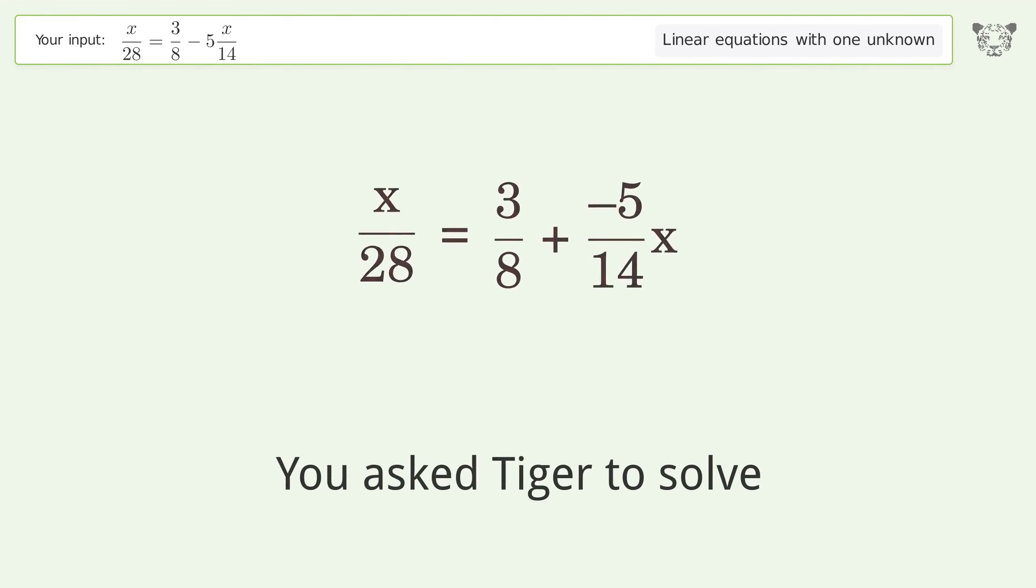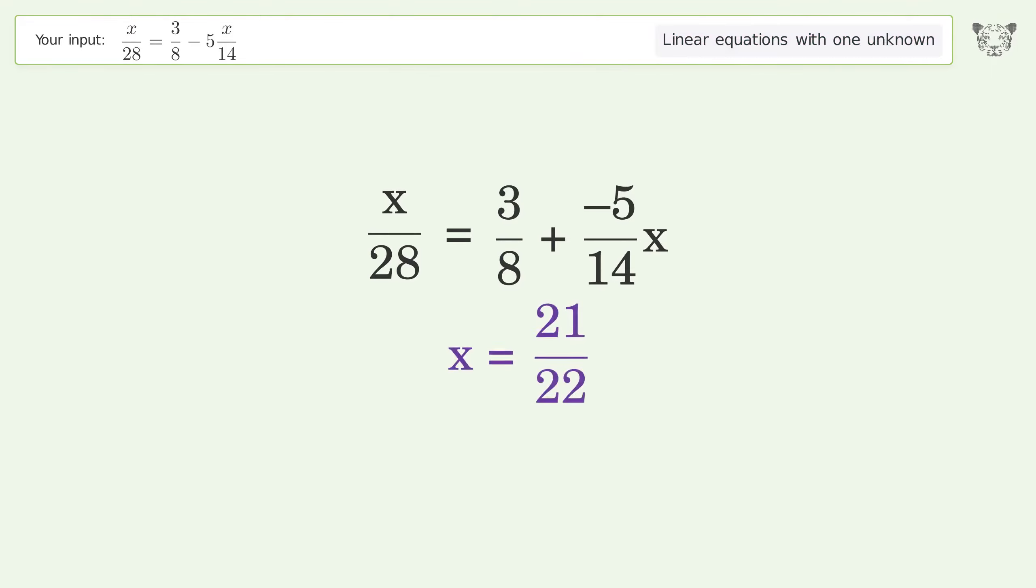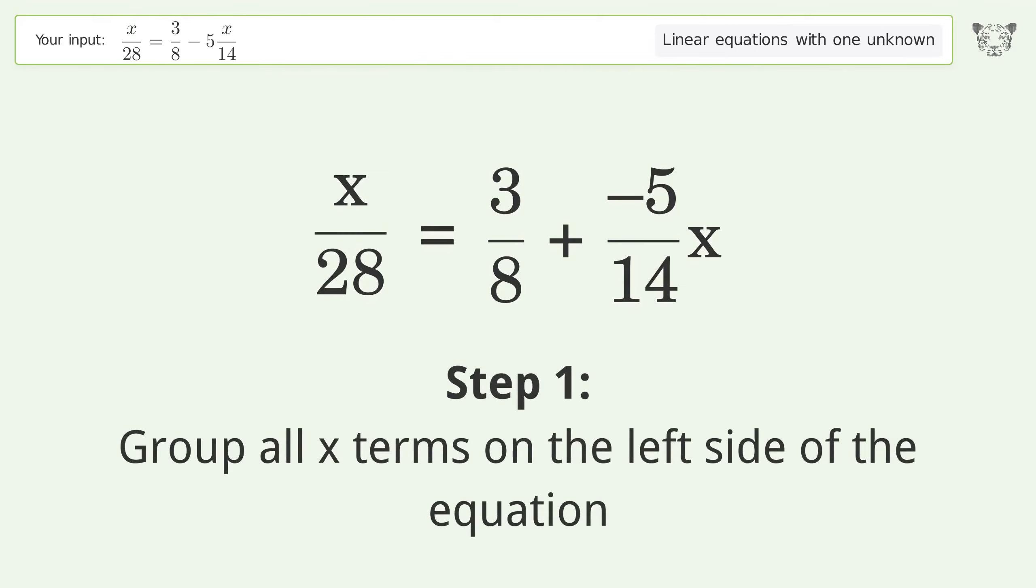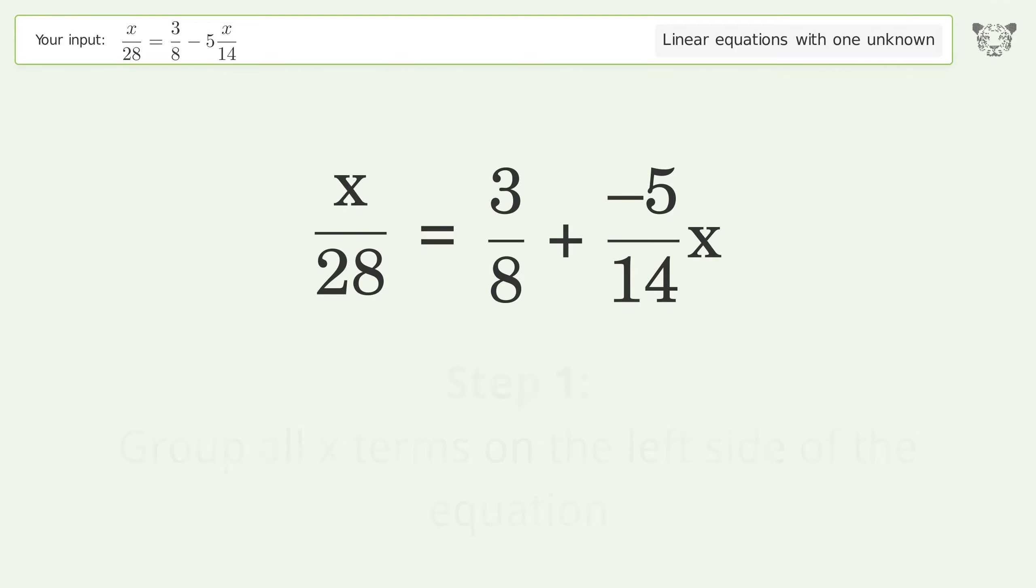You asked Tiger to solve this. This deals with linear equations with one unknown. The final result is x equals 21 over 22. Let's solve it step by step. Group all x terms on the left side of the equation and add